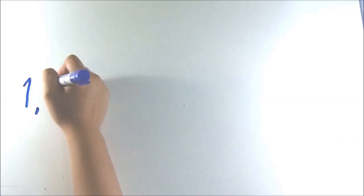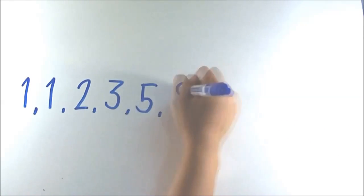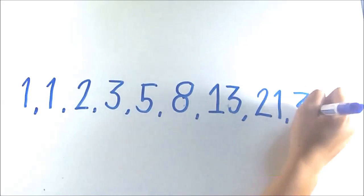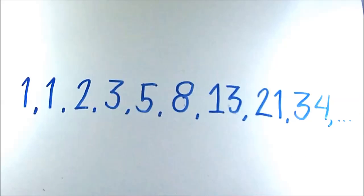The Fibonacci sequence is a series of numbers. The next number is found by adding up the two numbers before it.